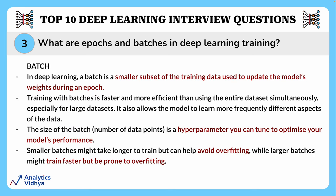A batch is a smaller subset of the training data used to update the model's weights during an epoch — like reading a book chapter by chapter instead of all at once. Training with batches is faster and more efficient, especially with large datasets, and allows the model to learn different aspects of the data more frequently. The batch size is a hyperparameter you can tune: smaller batches can help avoid overfitting, while larger batches train faster but are more prone to overfitting.